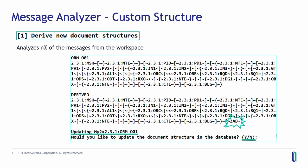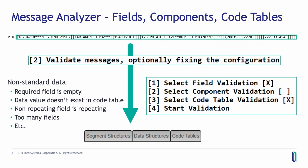Now we have all the segments we need in the correct order and definition, but there can be other issues within a segment. For example, data that is not according to the definition — there can be a field defined as required but empty in your data, or data in a field that is not defined in a code table for that field, or more than one value in a field that is not supposed to be repeating. All kinds of things the message analyzer will find.